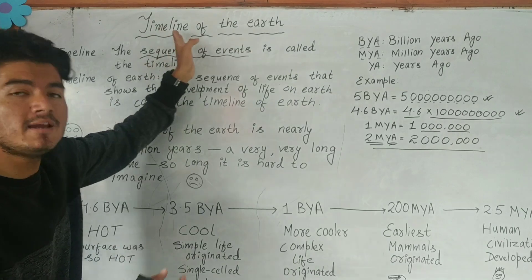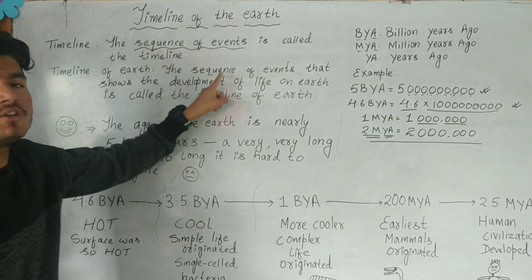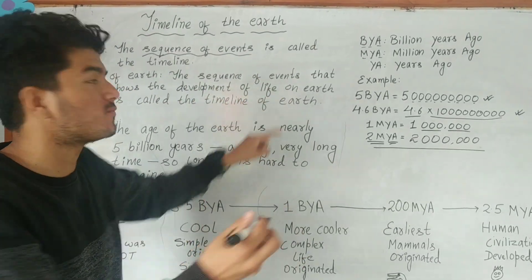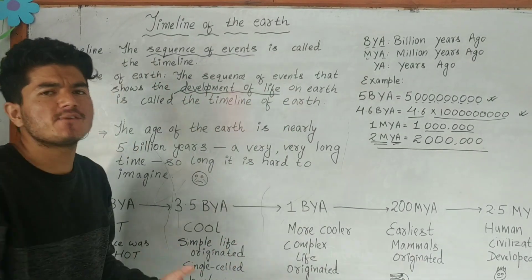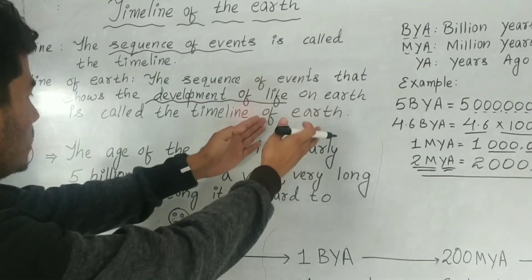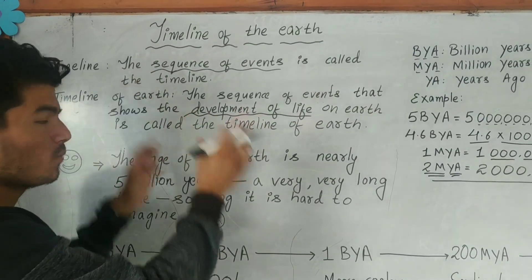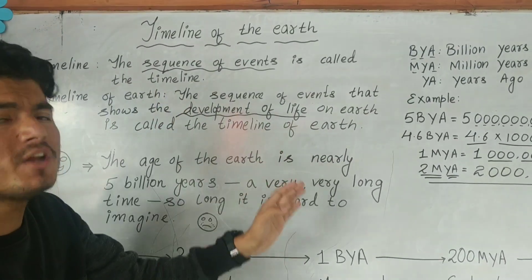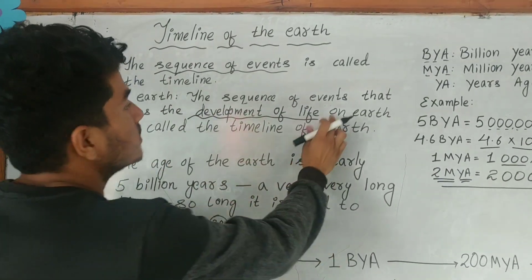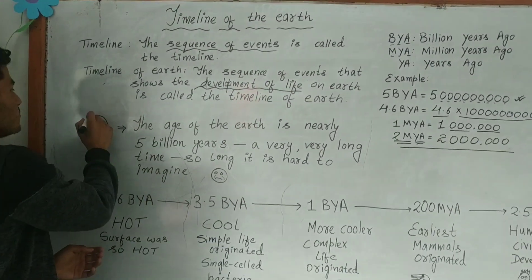Since we are studying the timeline of the Earth, the sequence of events that shows the development of life — how life originated and how life developed on Earth — is called the timeline of Earth. One interesting fact: the age of the Earth is nearly five billion years.